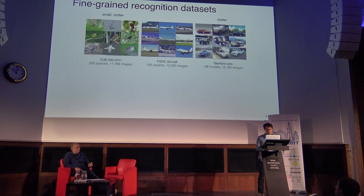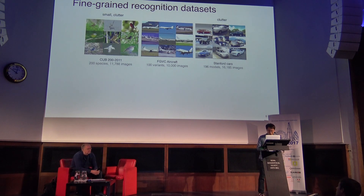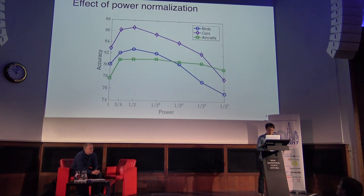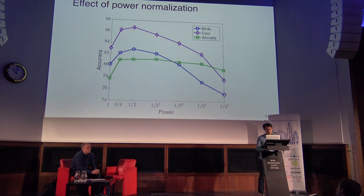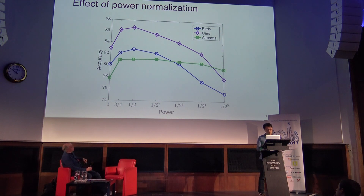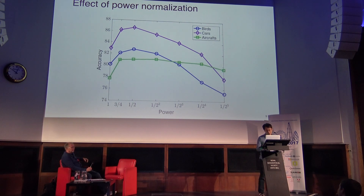We studied the effectiveness of this normalization on three fine-grained datasets: birds, aircraft, and cars. The figure shows the average accuracy versus power for power normalization, and the average accuracy peaks when the power is equal to 0.5, which corresponds to the matrix square root. This turns out to be fortunate, because we can approximate the matrix square root efficiently and compute the gradient precisely. In the following experiments, we use the matrix square root for power normalization.